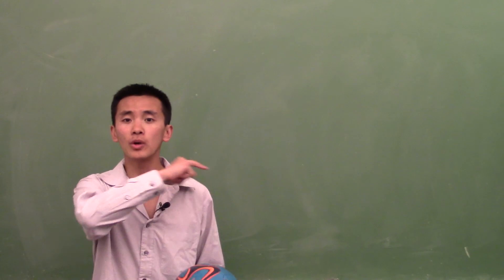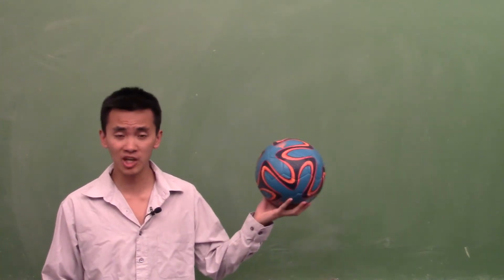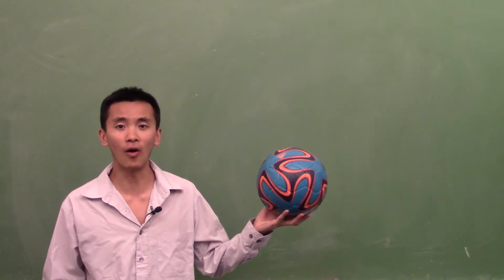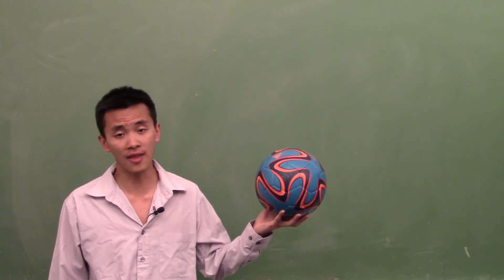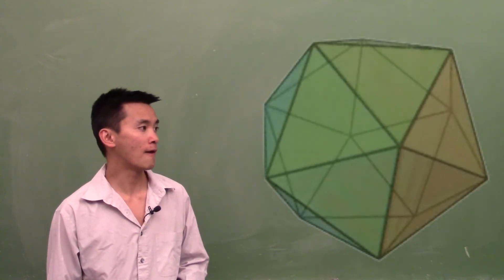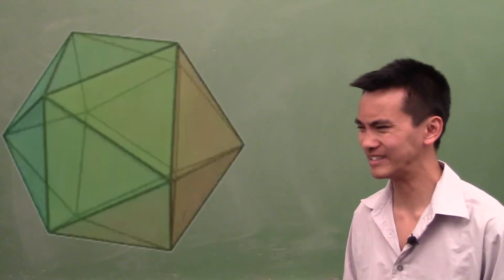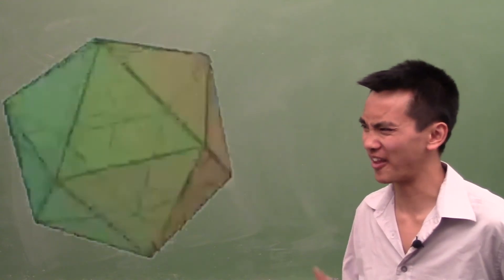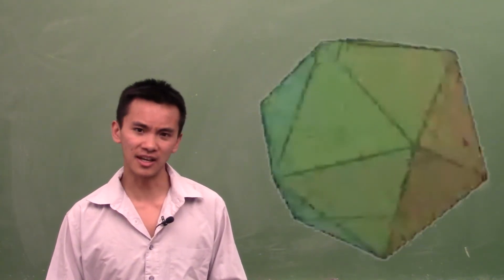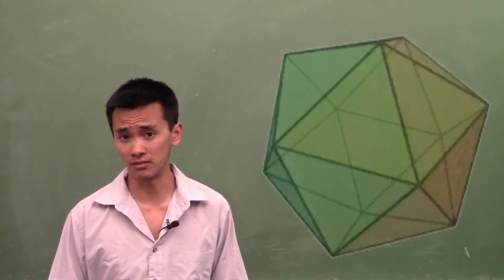So back to our soccer problem: What is the best shape for the soccer ball? Well, it's the roundest of all regular solids, and that's the icosahedron—the one that's made of 5 triangles at each corner. Yeah, but the icosahedron is not that round, is it? Well, you're right actually. The icosahedron is not that round.